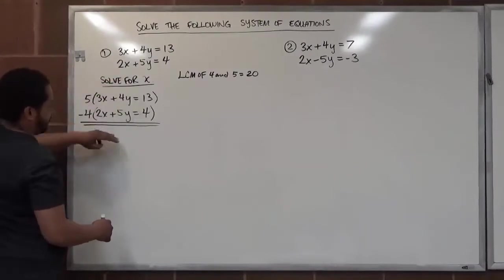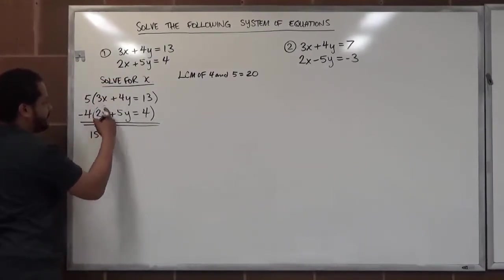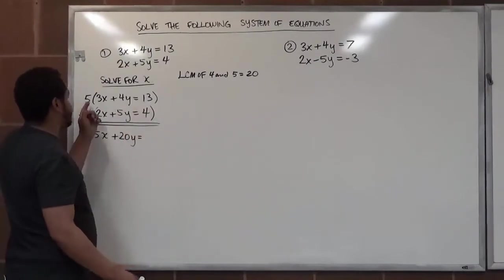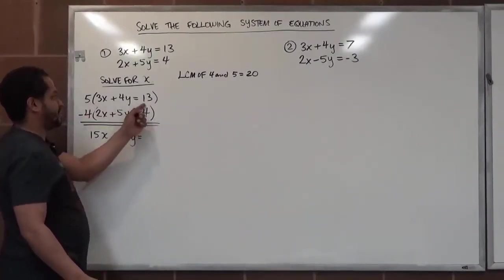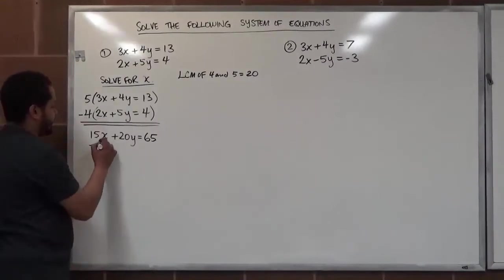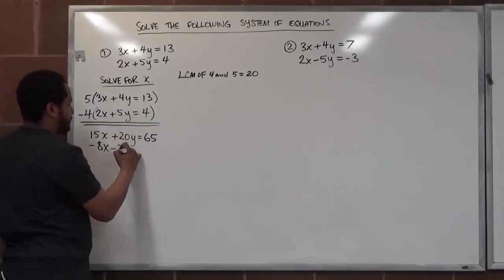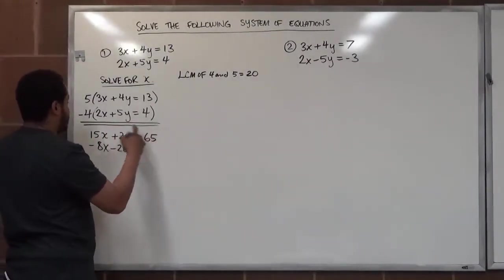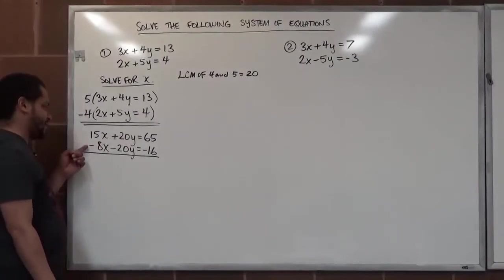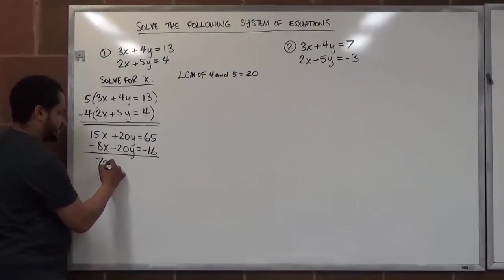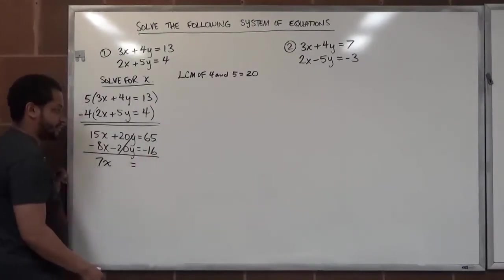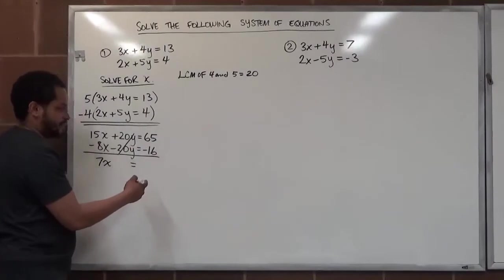Distributing: 5 times 3x gives 15x, 5 times 4y gives 20y, and 5 times 13 gives 65 (since 5 times 3 is 15, 5 times 10 is 50, and 50 plus 15 is 65). For the bottom: negative 4 times 2x is negative 8x, negative 4 times 5y is negative 20y, and negative 4 times 4 is negative 16. Adding the lines: 15x minus 8x is 7x, the 20y terms cancel, and 65 minus 16 equals 49.